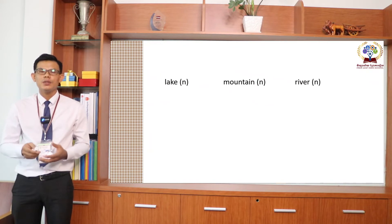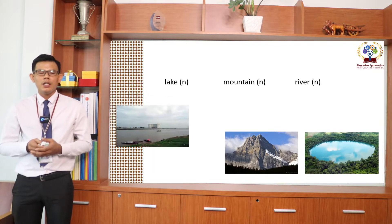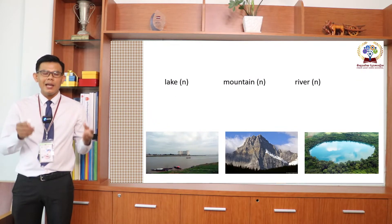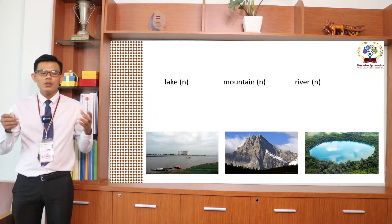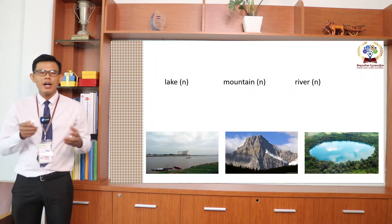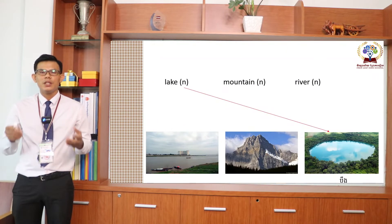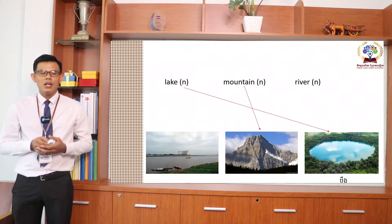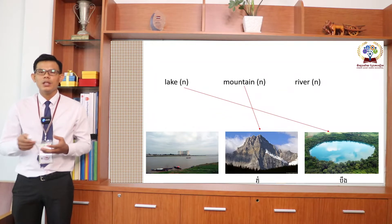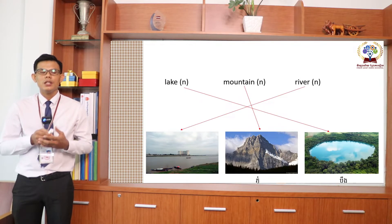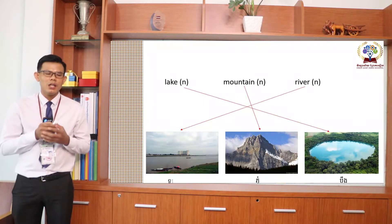Here we have more words and pictures. Look at lake, mountain, and river, and match them with the pictures. Lake — in Khmer we say 'Bung.' Mountain — in Khmer we say 'Phnom.' And river — in Khmer we say 'Tunle.'